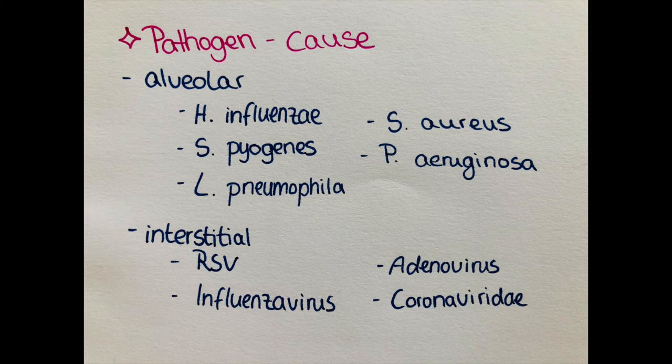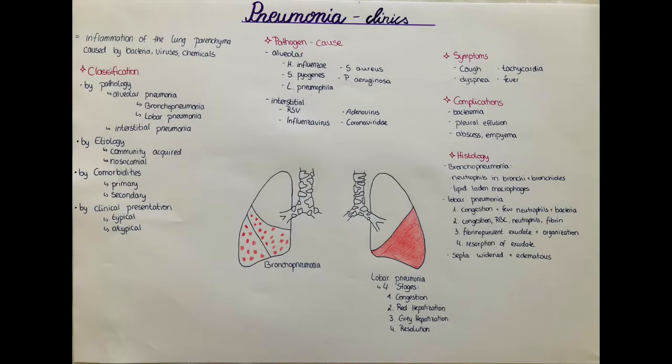Around 40 to 50 percent of pneumonias are due to Streptococcus pneumoniae, which is usually diagnosed by cultivating the sputum, where increased neutrophils and gram-positive diplococci are visible. In 20 to 25 percent of all pneumonias, the pathogen is unknown.